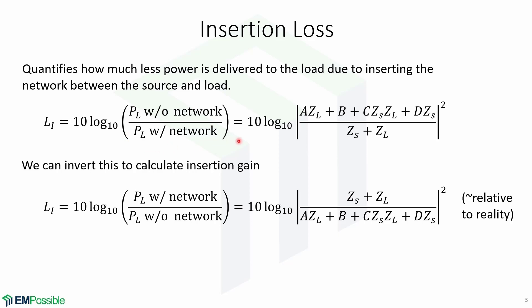In transmission parameters, insertion loss is equal to this expression. We can invert this expression to calculate insertion gain, which is equal to 10 log base 10 of the power delivered to the load with the network over the power delivered to the load without the network. Notice that insertion loss is calculated relative to real parameters, as opposed to an ideal network and system.